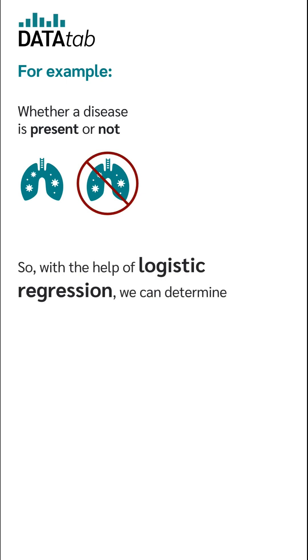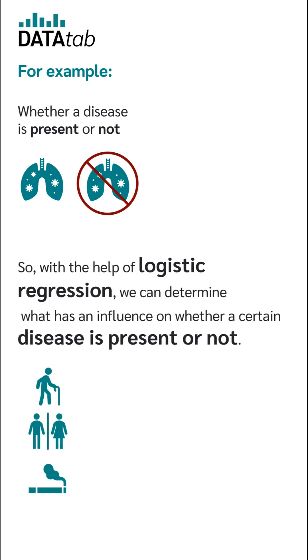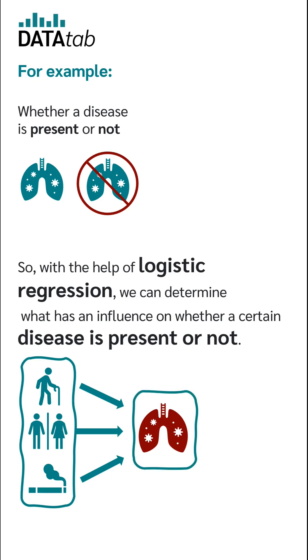So with the help of a logistic regression, we can determine what has an influence on whether a certain disease is present or not. We could study the influence of age, gender and smoking status on that particular disease.